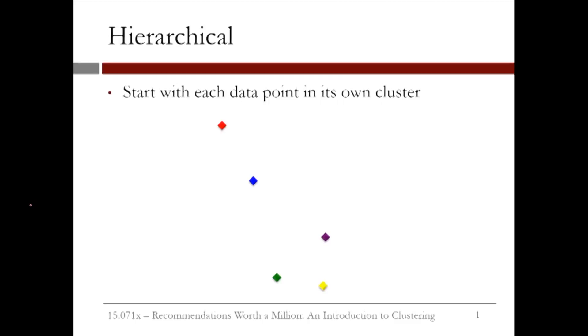As a small example, suppose we have five data points. Each data point is labeled as belonging in its own cluster. So this data point's in the red cluster, this one's in the blue cluster, this one's in the purple cluster, this one's in the green cluster, and this one's in the yellow cluster.